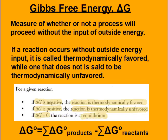Just like delta H and delta S, we can find delta G naught by doing the sum of our delta G products minus the sum of our delta G reactants, multiplying by the coefficients like we've done previously.